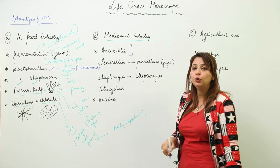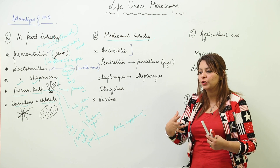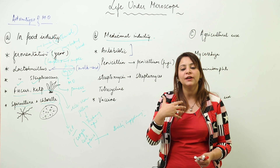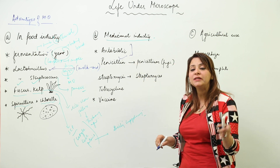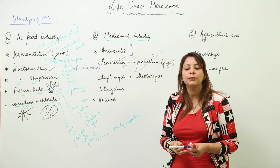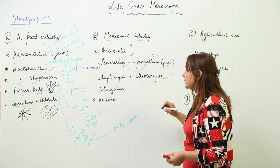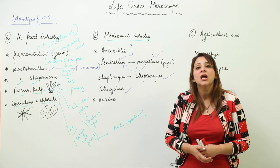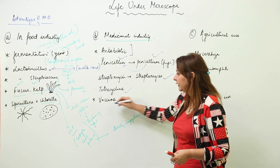The second major use is medicinal. Antibiotics are chemicals you take to retard the growth of microorganisms in your body, fighting pathogens that have entered and are causing harm. The first antibiotic synthesized was penicillin, produced from a fungus called Penicillium. Similarly, streptomycin is produced from Streptomyces, and erythromycin and tetracycline are obtained from other bacteria.